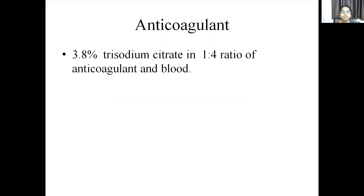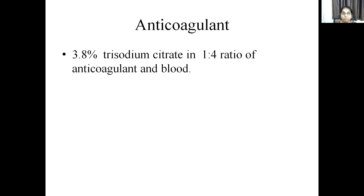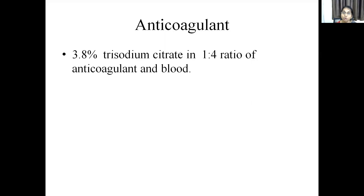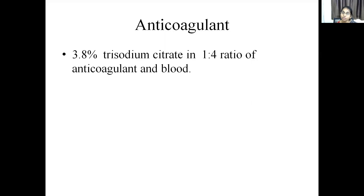The anticoagulant used is 3.8% trisodium citrate in a ratio of 1 to 4 — that is, one part anticoagulant to four parts blood. This anticoagulant is also used for coagulation studies, but in a different ratio of 1 to 9 — one part anticoagulant to nine parts blood. For ESR estimation, the ratio is 1 to 4.